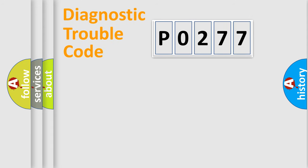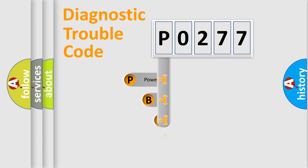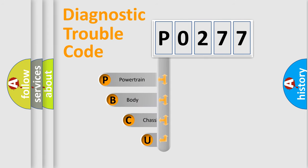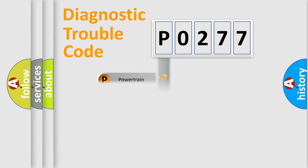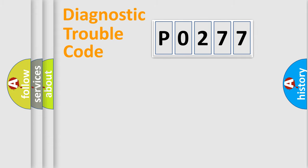First, let's look at the history of diagnostic fault code composition according to the OBD2 protocol, which is unified for all automakers since 2000. We divide the electrical system of an automobile into four basic units: Powertrain, Body, Chassis, and Network.